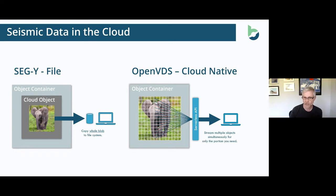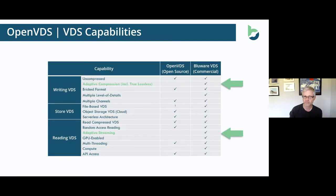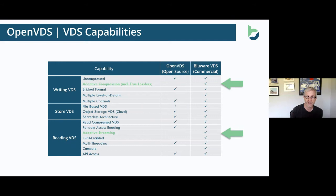That's what I wanted to recap from the OpenVDS webinar. If you haven't seen it, we have a recording on our website — I strongly recommend you check that out. To set the scene around VDS capabilities: OpenVDS, which is open source through the Open Subsurface Data Universe (OSDU), has many features around writing, storing, and reading VDS. The key differentiators in our commercial version are the ability to apply compression including true lossless, and also adaptive streaming — which we'll cover today.